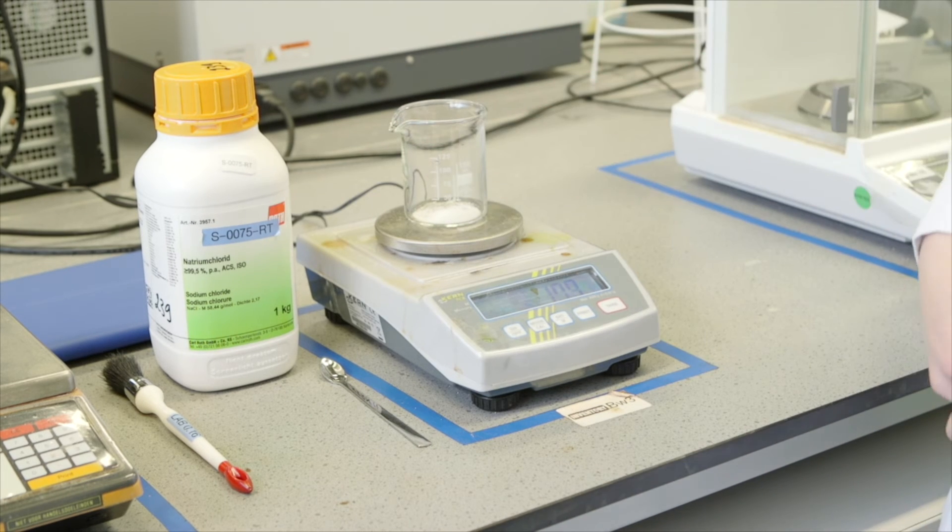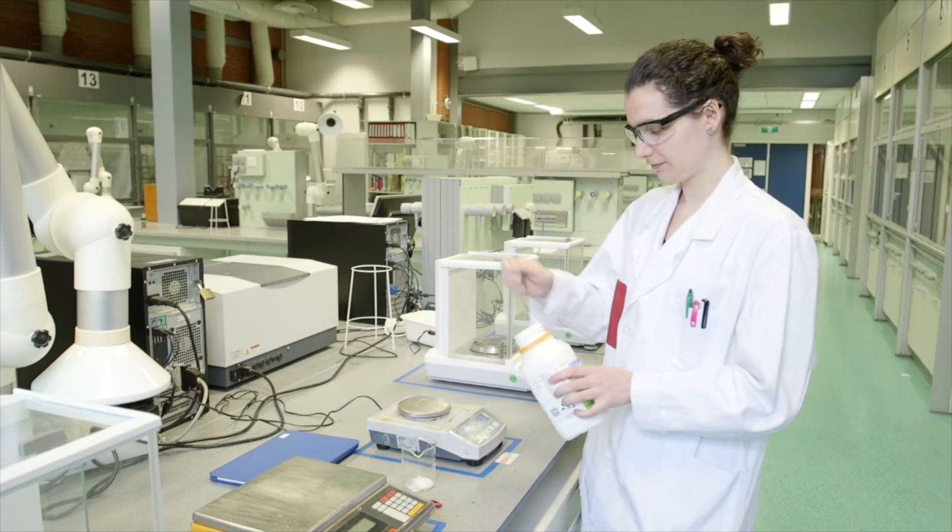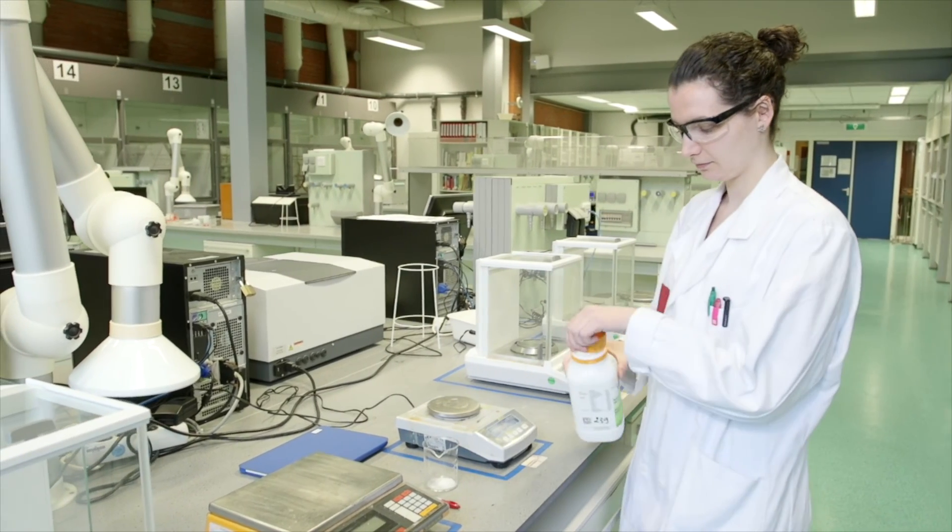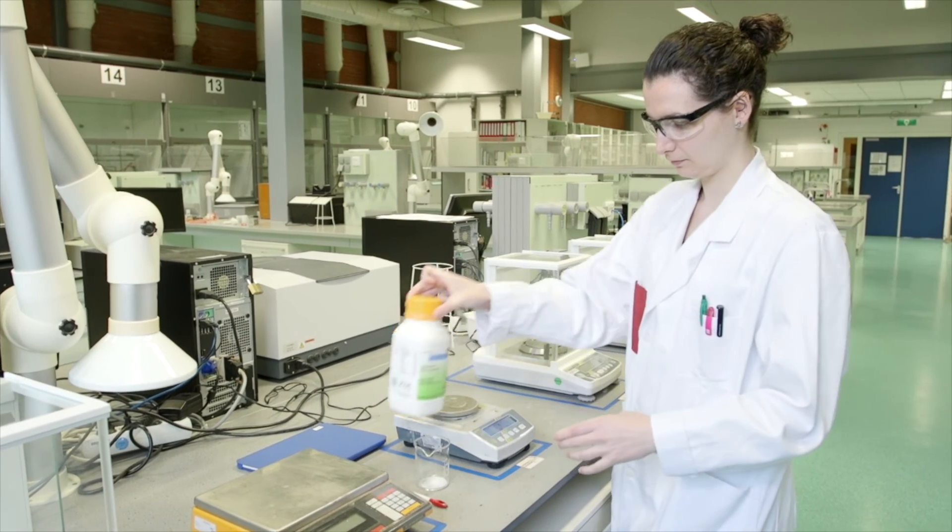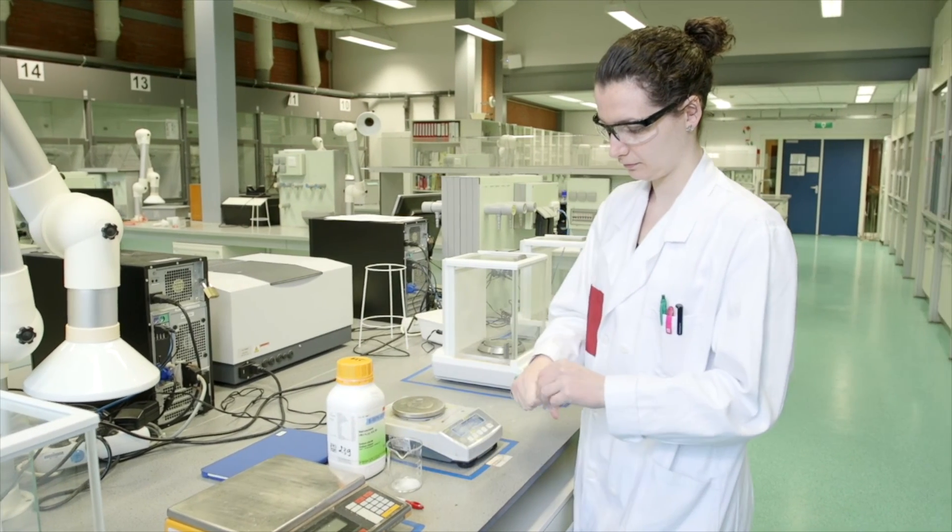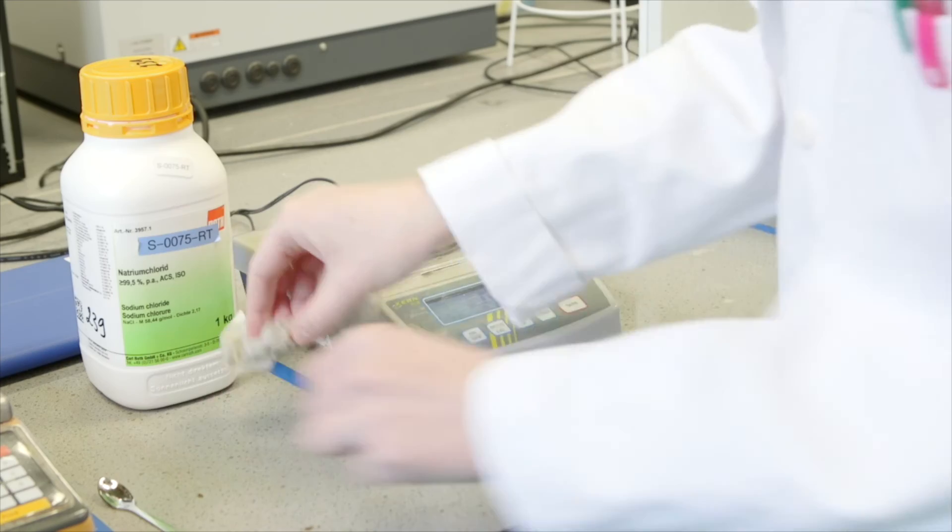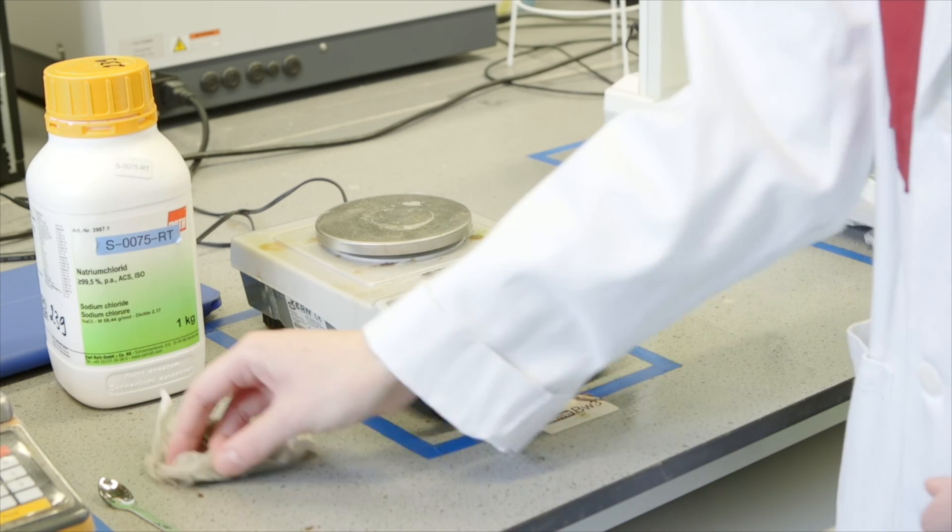If there is not enough material in the beaker, simply repeat the procedure. If there is too much material, it is removed with the spatula and discarded into the solid waste container. Please note that you do not add the material to be weighed if the beaker is on the balance. The table is cleaned with a wet piece of paper.